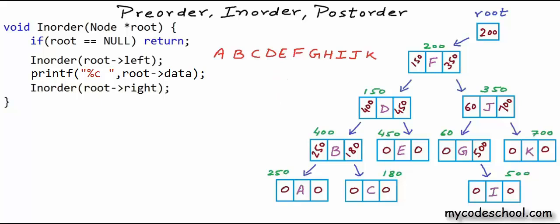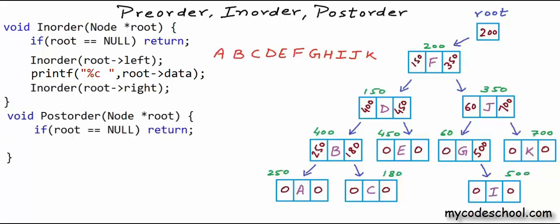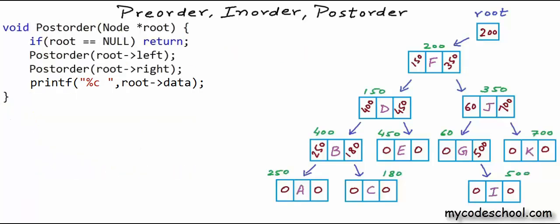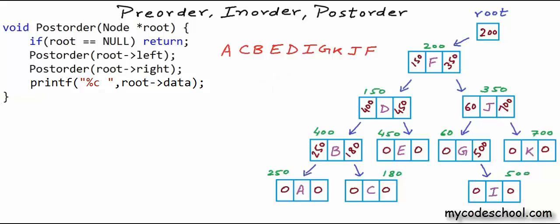Now let's write code for postorder. The base case is again the same: if root is null, return. If root is not null, I first visit the left sub-tree with a recursive call, then the right sub-tree with another recursive call, and then visit the root node by printing its data. Postorder traversal for this example tree gives the output shown here. So that is pre-order, in-order, and post-order for you. You can check the description for a link to all the source code.